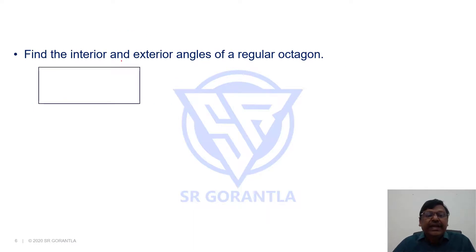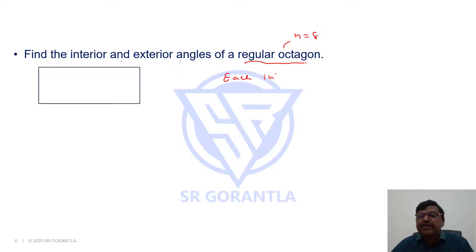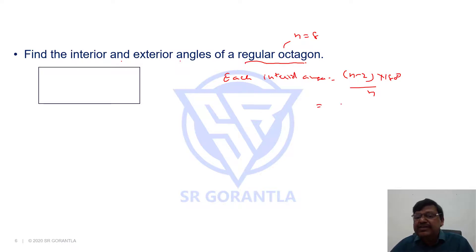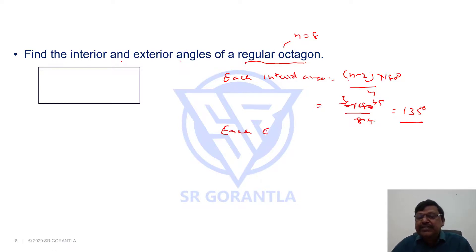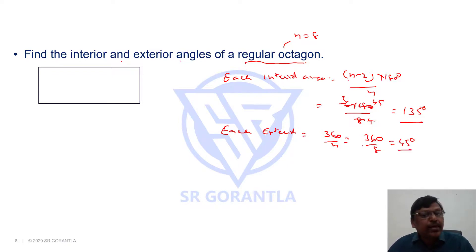Let's solve a couple of questions. First: find the interior and exterior angle of a regular octagon. Octagon means n = 8. Each interior angle = (n − 2) × 180 / n = (8 − 2) × 180 / 8 = 6 × 180 / 8 = 135 degrees. So each interior angle of a regular octagon is 135 degrees.